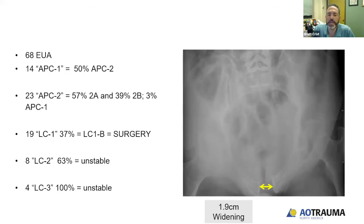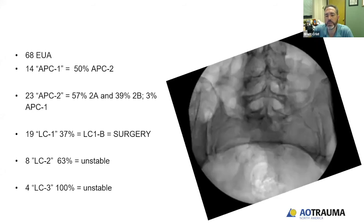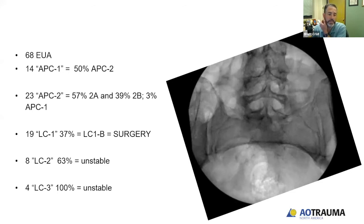This is a patient I was concerned about — classified as APC1 but I thought examination under anesthesia would be beneficial. They also looked at 23 APC2s, and 57% were reclassified as 2A or 2B; only one was reclassified as APC1. For LC1s — 19 cases — 37% were positive on stress exam and classified as LC1B, going on to surgery. Eight LC2s had 63% unstable, and four LC3s were 100% unstable, which would be expected.